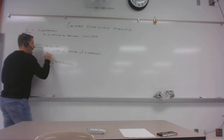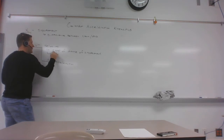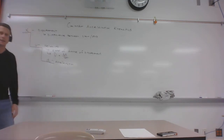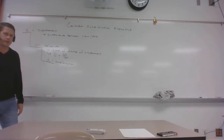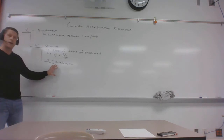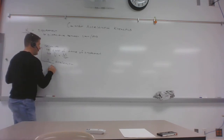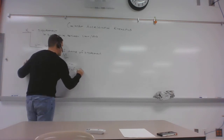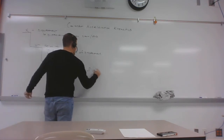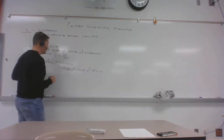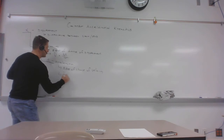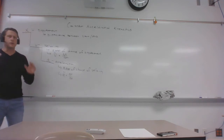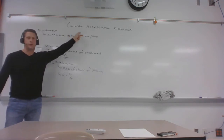Velocity is the rate of change of displacement: average velocity v-bar equals delta x over delta t. And acceleration is the rate of change of velocity — how quickly your velocity changes — so average acceleration equals delta v over delta t.